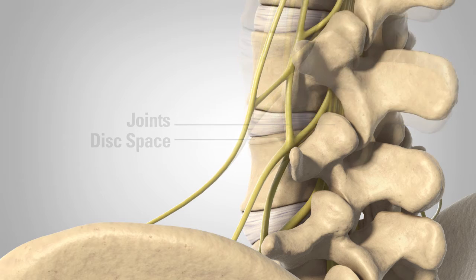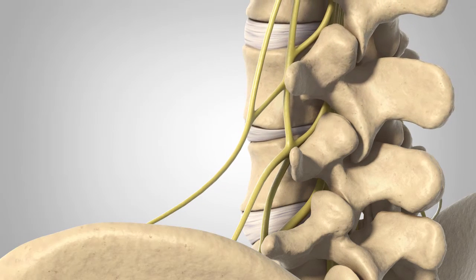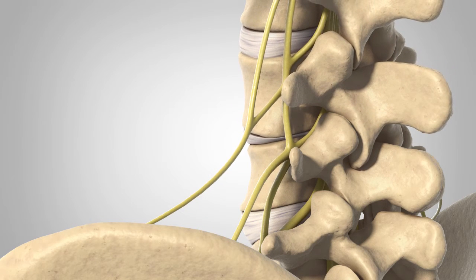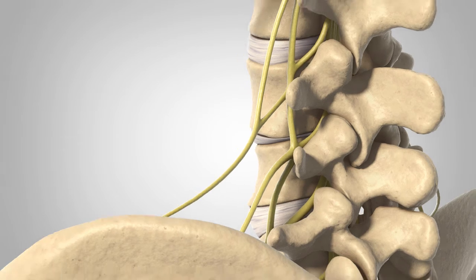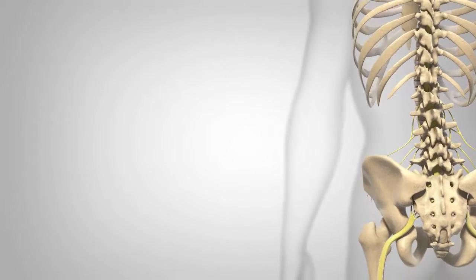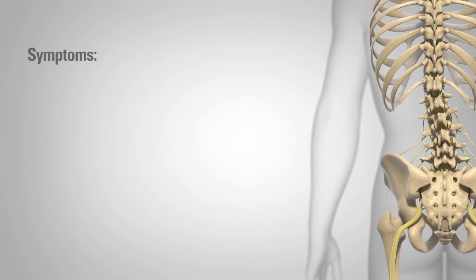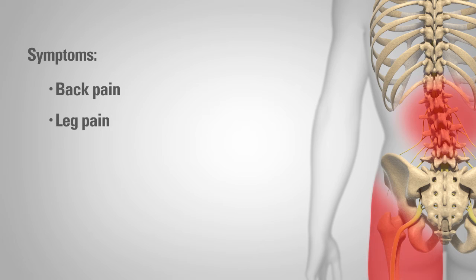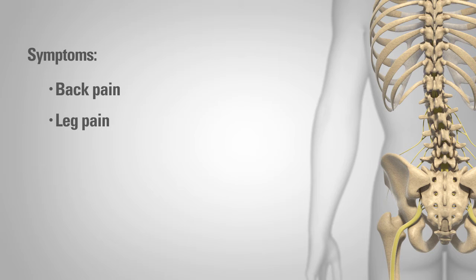As the joints degenerate, they create a misalignment in the back, resulting in a bend or curvature. This misalignment of the spine can cause back and/or leg pain due to muscle fatigue and nerve impingement, and may lead to a condition known as lumbar stenosis.